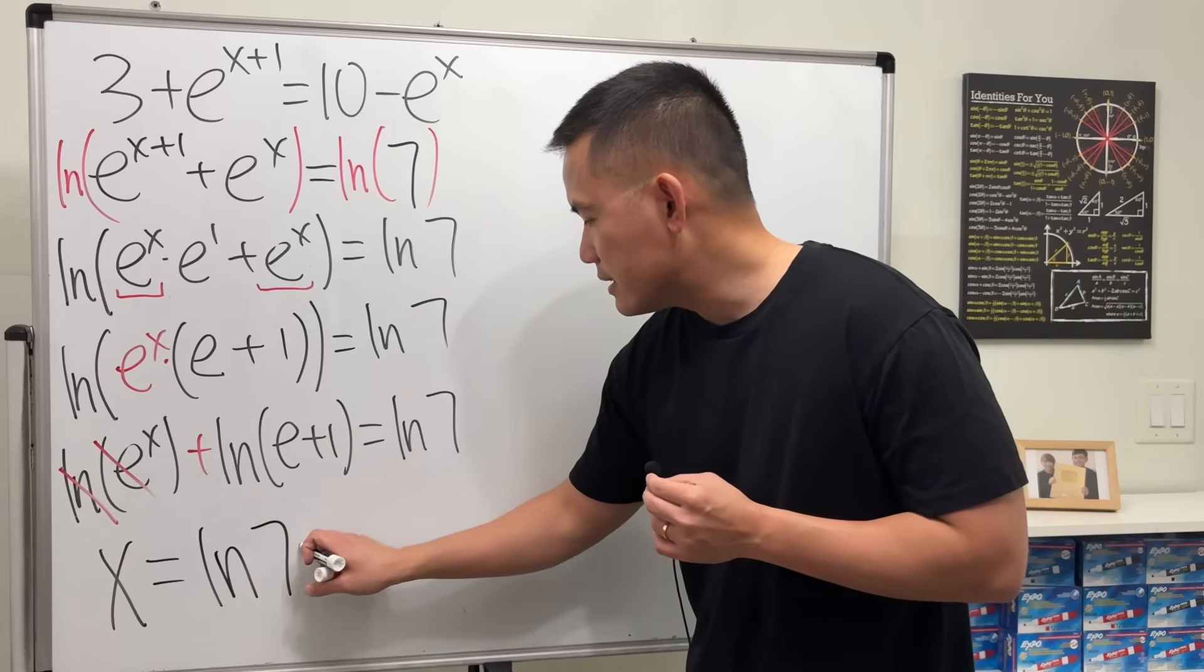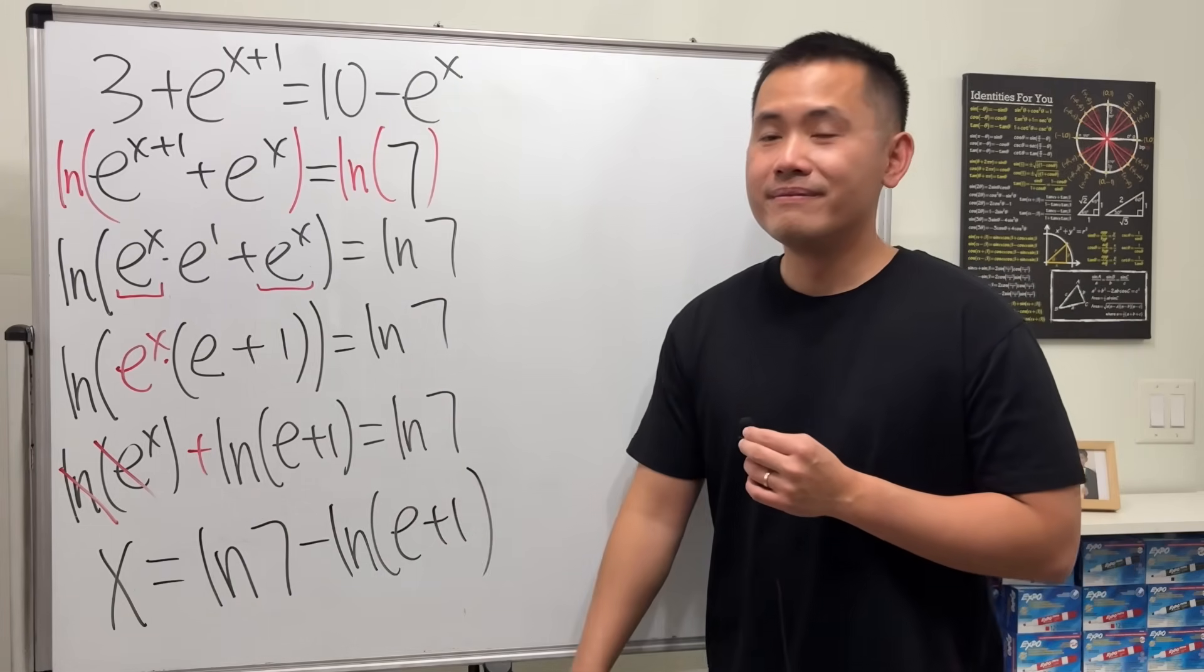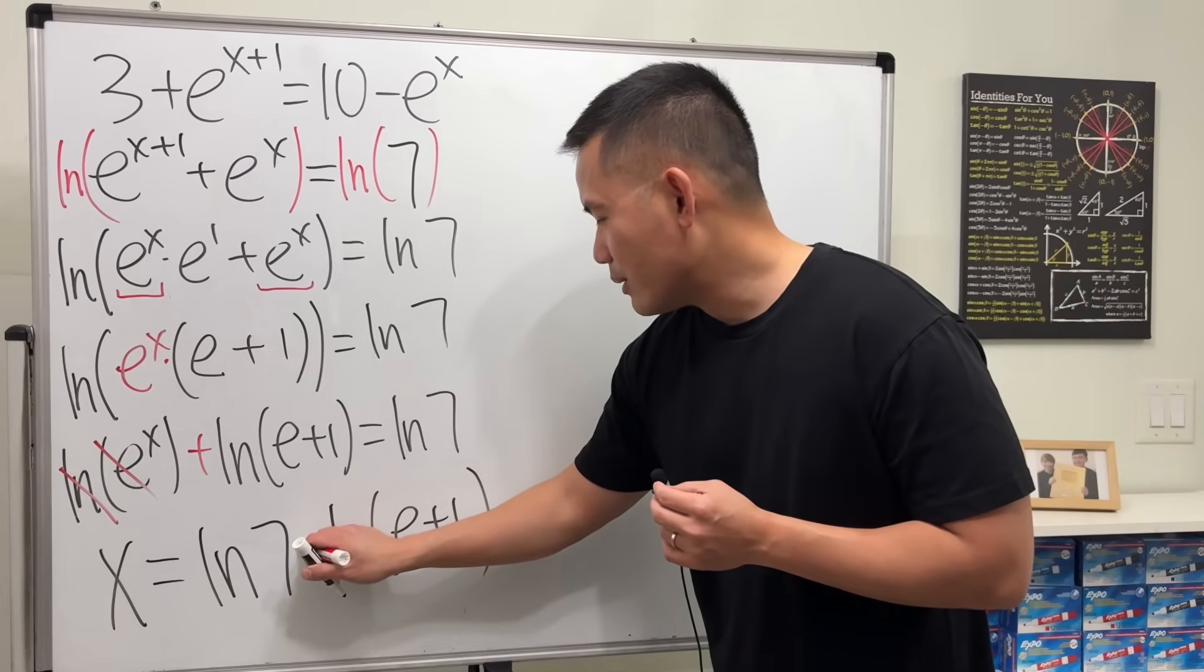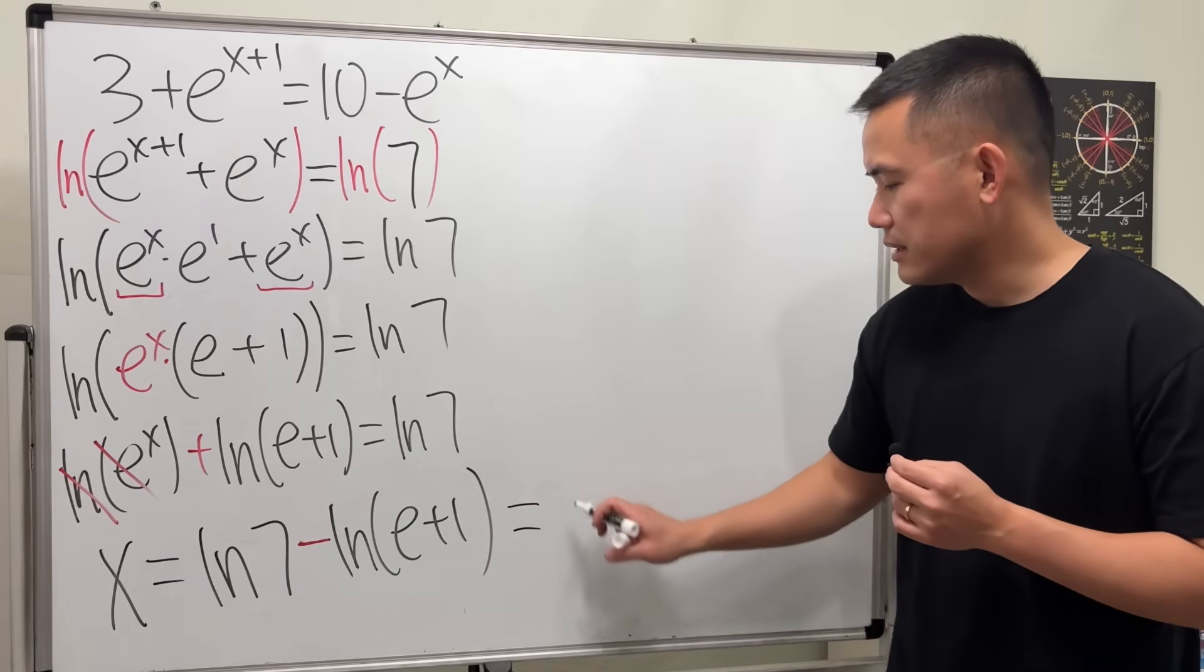So we will have ln(7) minus ln(e + 1). And that's pretty much it. Finally, though, if you would like,